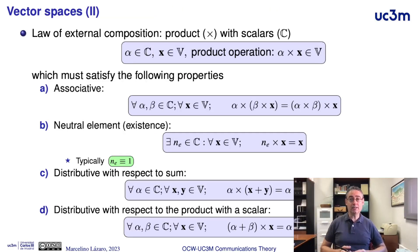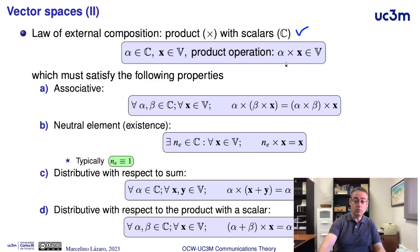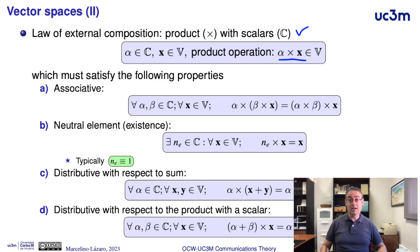And it is necessary to have another law, in this case of external composition — the product with scalars, complex numbers or real numbers — where the product of a scalar with a vector is a vector. These two laws, the internal and external composition laws, must satisfy some conditions.